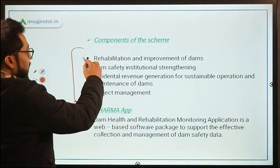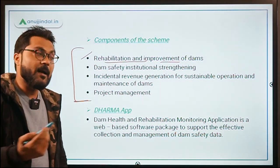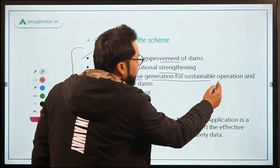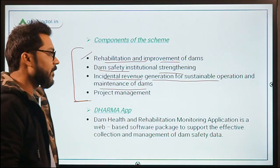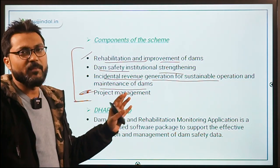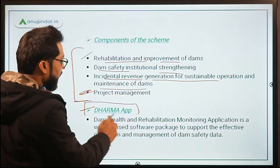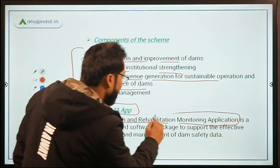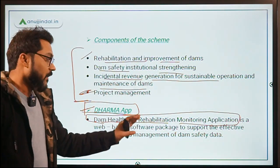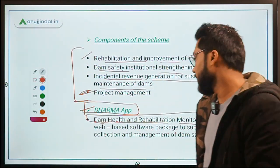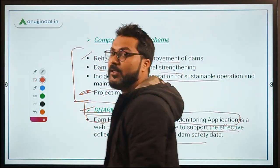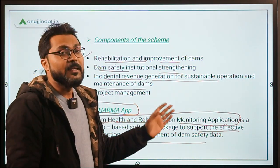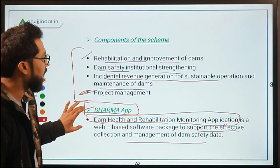There are four components of this project: rehabilitation and improvement of dams, dam safety institutional strengthening, incidental revenue generation for sustainable operation and maintenance of dams, and project management. There is also an app called the DHARMA app — Dam Health and Rehabilitation Monitoring Application — which is used to support effective collection and management of dam safety related data.